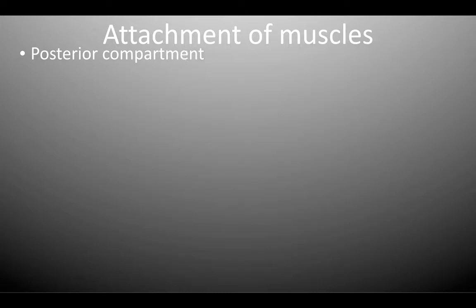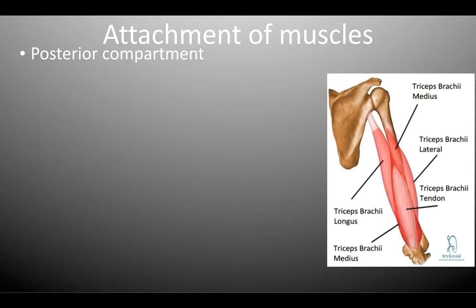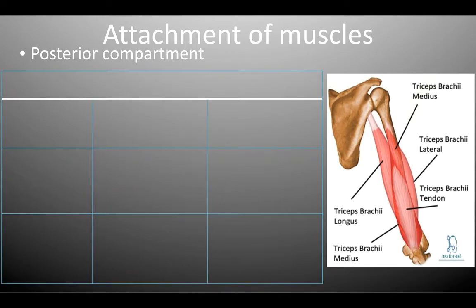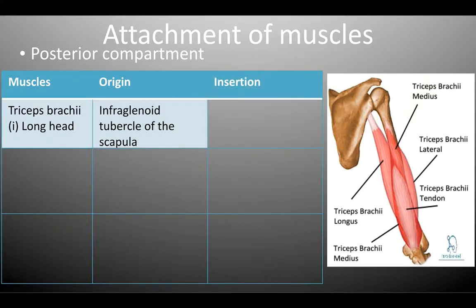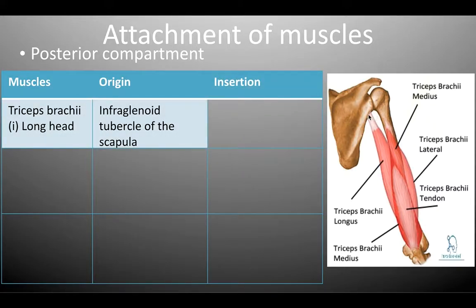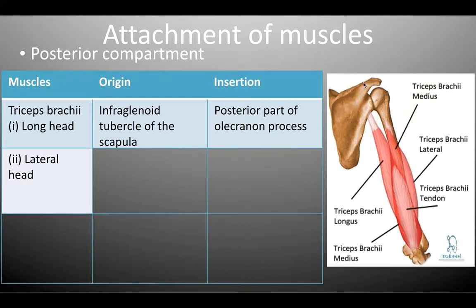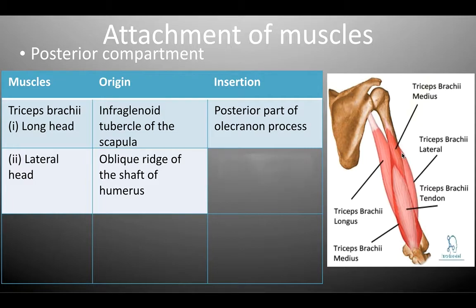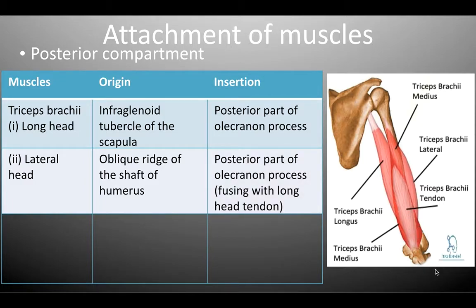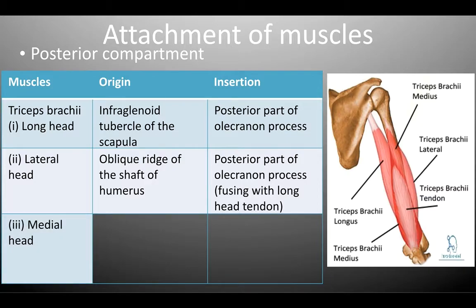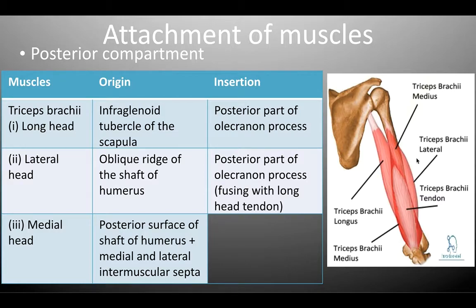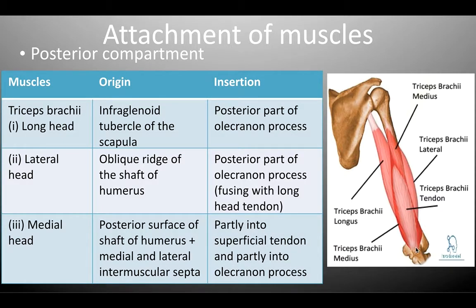Looking at the posterior compartment muscles, we have the triceps brachii. As the name implies, it has three heads: the medial head, the lateral head, and the long head. The long head originates from the infraglenoid tubercle of the scapula, inserting into the posterior part of the olecranon process. The lateral head originates from the oblique ridge of the shaft of the humerus, inserting into the posterior part of the olecranon process along with the long head tendon. The medial head originates from the posterior surface of the shaft of the humerus and the medial and lateral intermuscular septum, inserting partly into the superficial tendon and partly into the olecranon process.